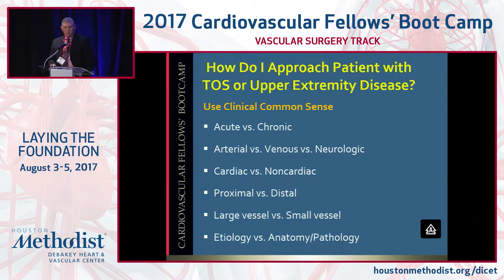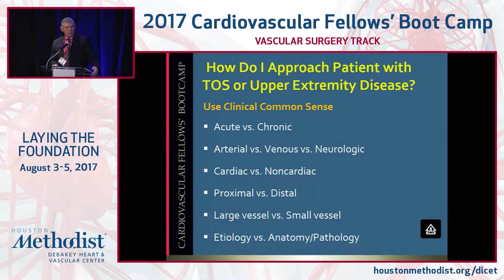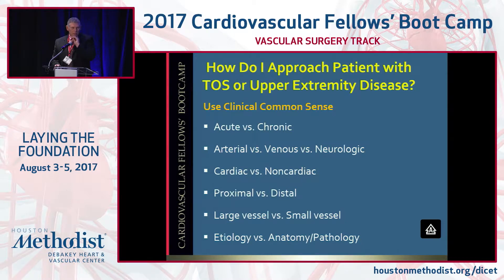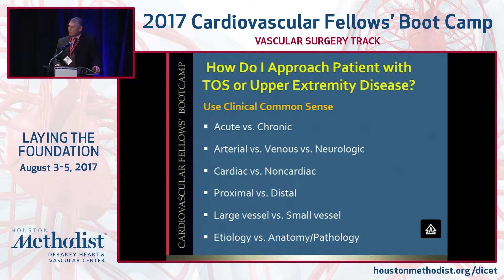So the question is, you're in clinic, and somebody comes in with these vague symptoms, and your question is: how do I approach the patient who might have TOS or an upper extremity disease? Well, you have to categorize how you think. Is it acute versus chronic? Is it arterial, venous, or neurologic? Is it cardiac or non-cardiac in origin? Is it proximal or distal? Is it large vessel or small vessel? And you base it on etiology, anatomy, or pathology. You have to have a process in terms of how you evaluate those people rather than just read about it in a text and know numbers.